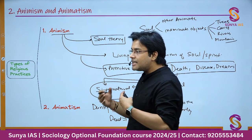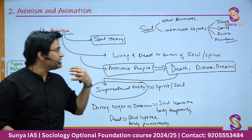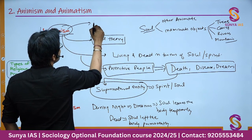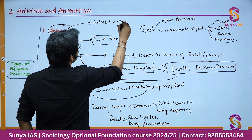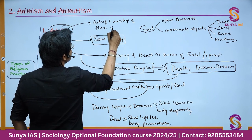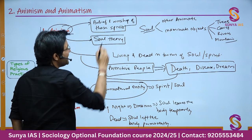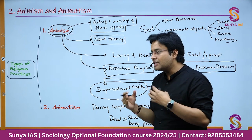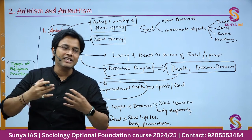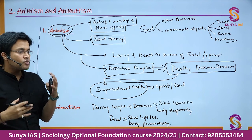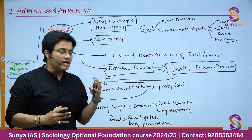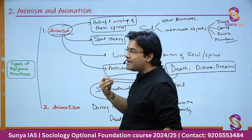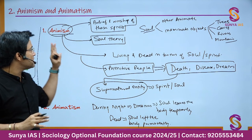In a nutshell, animism is all about the belief and worship of these spirits. As society evolved, these spirits took the form of God — just like today we have Shiv God, Brahma God — who has the power to control the destiny of human beings. This is how animism came into existence, and all credit goes to E.B. Tyler who came up with this concept. Remember: animism is always related with spirits or soul, which is why it is also called soul theory. Every different object possesses a different kind of spirit.